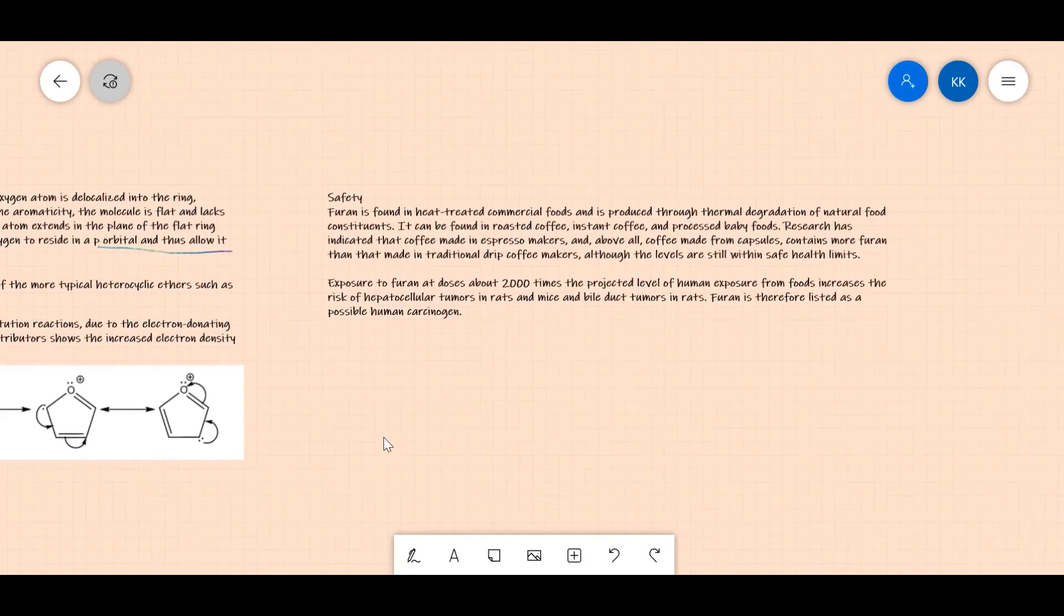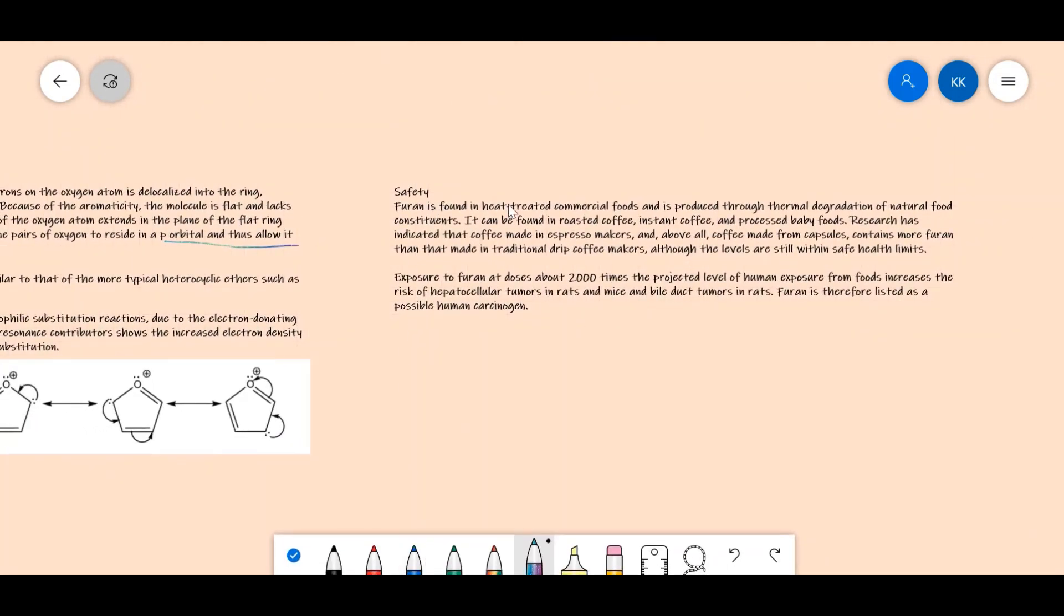Now let's look at safety concerns regarding furan. Furan is found in heat-treated commercial foods and is produced through thermal degradation of natural food constituents. It can be found in roasted coffee, instant coffee, and processed baby foods. Research has indicated that coffee made in espresso makers and especially coffee made from capsules contains more furan than coffee made in traditional drip coffee makers, although the levels are still within safe health limits.